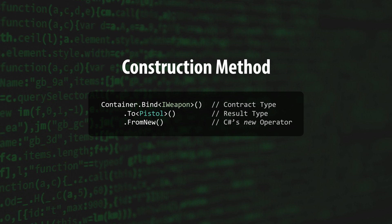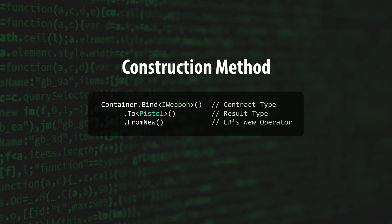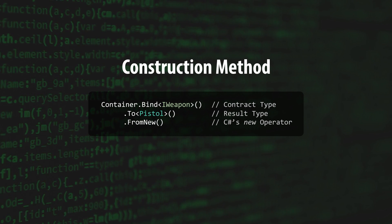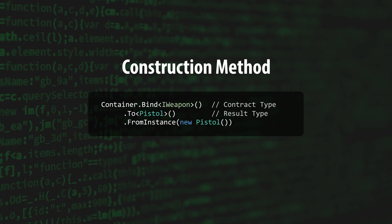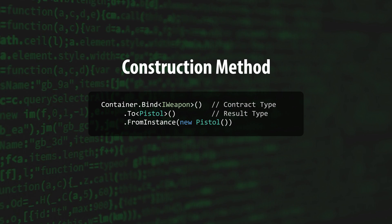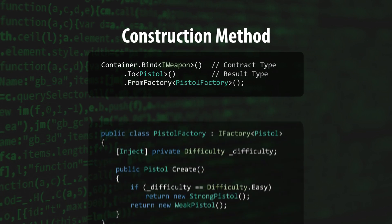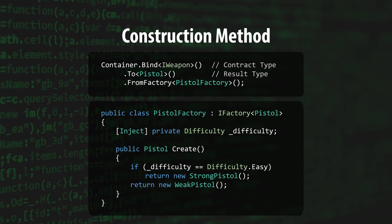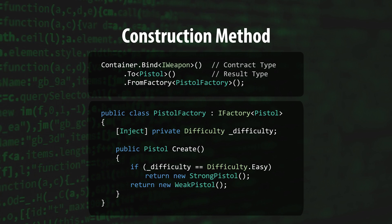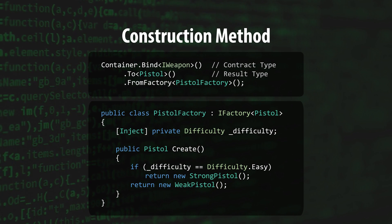Zenject supports multiple types of construction methods that are enabled by calling From, followed by the name of the construction method of choice. The default construction method is FromNew, which uses the C# new operator to create an instance of the result type. Among the most commonly used construction methods is FromInstance, which takes an instance of result type that you pass in — you might recognize this from the Hello World example in Zenject's documentation. This is great for encapsulating dependencies that have more complicated setup logic. FromFactory allows you to encapsulate creation logic even further with the use of factories, which are perfect for situations where the creation logic of your objects requires its own dependencies that can be injected right into your custom factory. There are many other construction methods available, but most of them are very situational and won't be covered in this video.